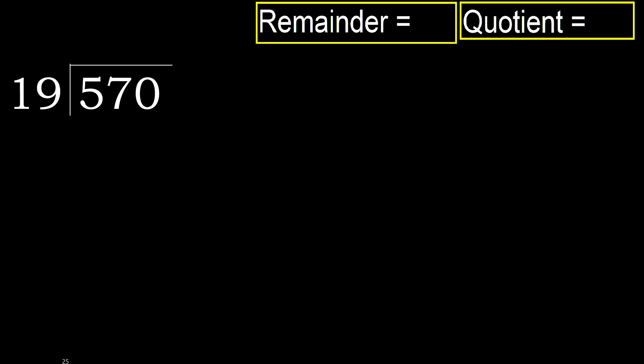570 divided by 19. 5 is less, therefore next. 57 is not less, therefore work with 57. 19 multiplied by which number is nearest to 57 but not greater? 19 multiplied by 4 is greater.